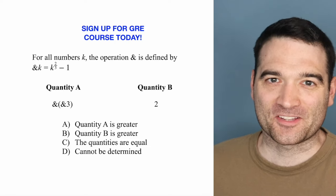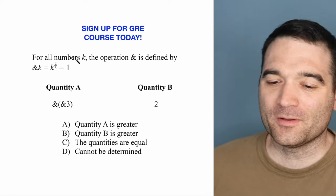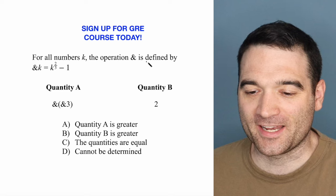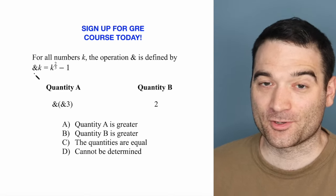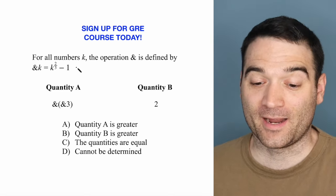Here's a GRE algebra question. Let's take a look. For all numbers k, the operation ampersand is defined by ampersand k equals k to the power of two-thirds minus one.